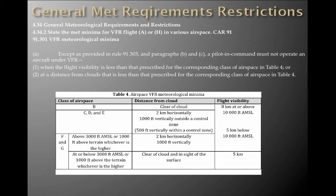For Class F and G above 3,000 feet above mean sea level, or 1,000 feet above terrain, whichever is higher, you need 2K horizontal and 1,000 feet vertical, and the flight visibility is the same — 8K at or above 10,000 feet, and 5K below 10,000 feet.